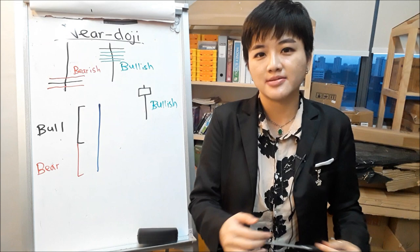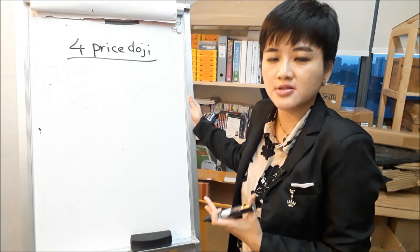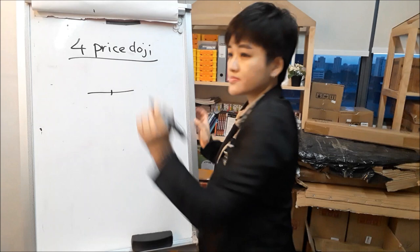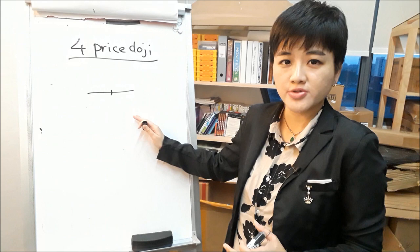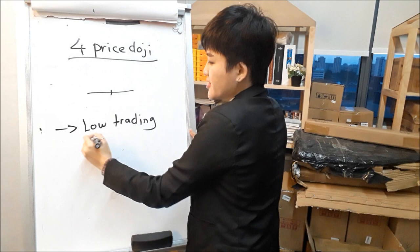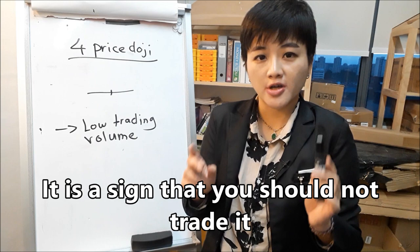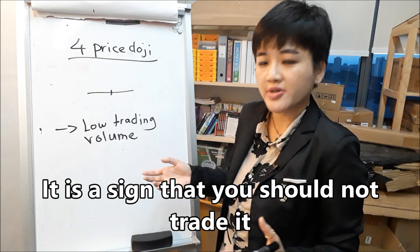There is one very special type of doji that a lot of people don't talk about — it's called the four-price doji. This is very common in the stock market, especially in stocks that are not so liquid. Basically, the high, low, open, and close are all equal. This pattern tells you that there is very low liquidity or trading volume. You see this very often in penny stocks and small cap stocks that are not so popular. Personally, if you see a lot of these patterns, it is a sign that you should not even trade this stock.